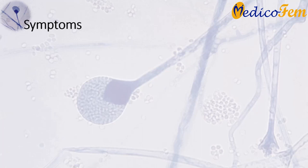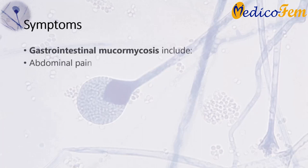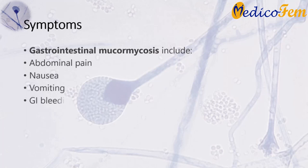Symptoms of gastrointestinal mucormycosis include abdominal pain, nausea and vomiting, and gastrointestinal bleeding.